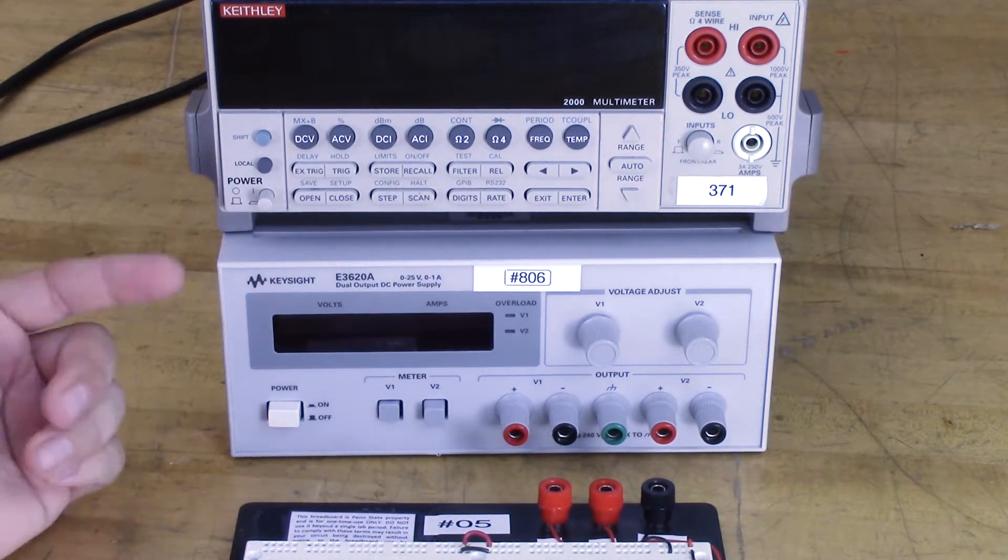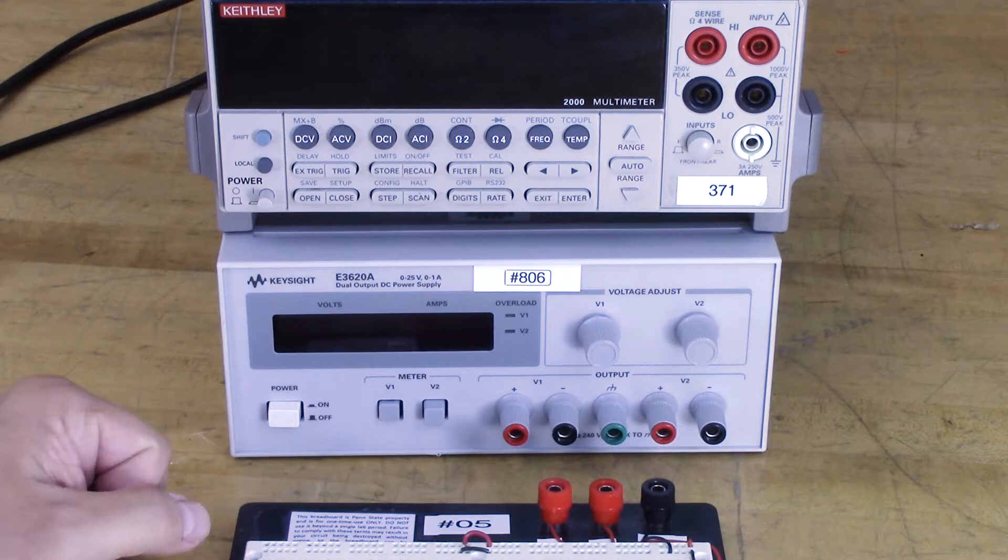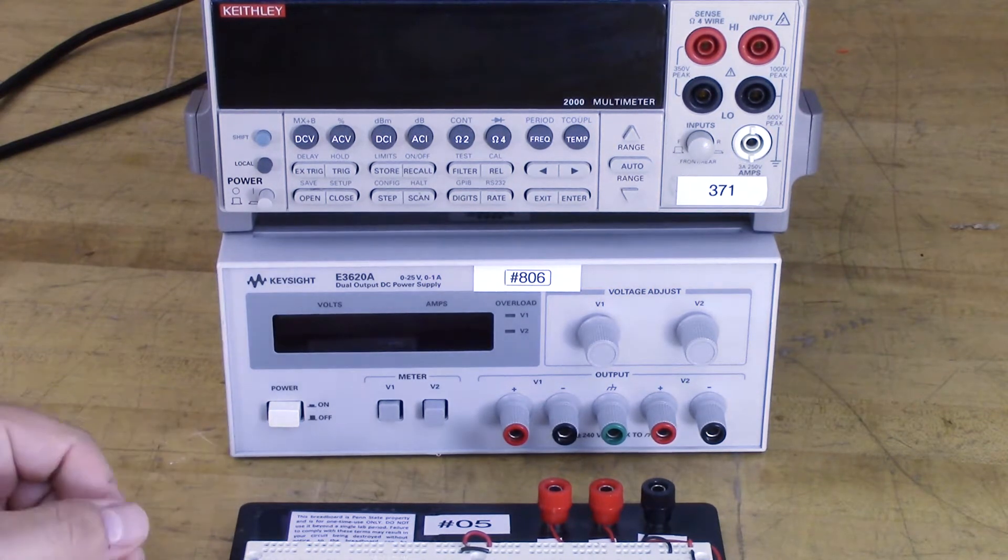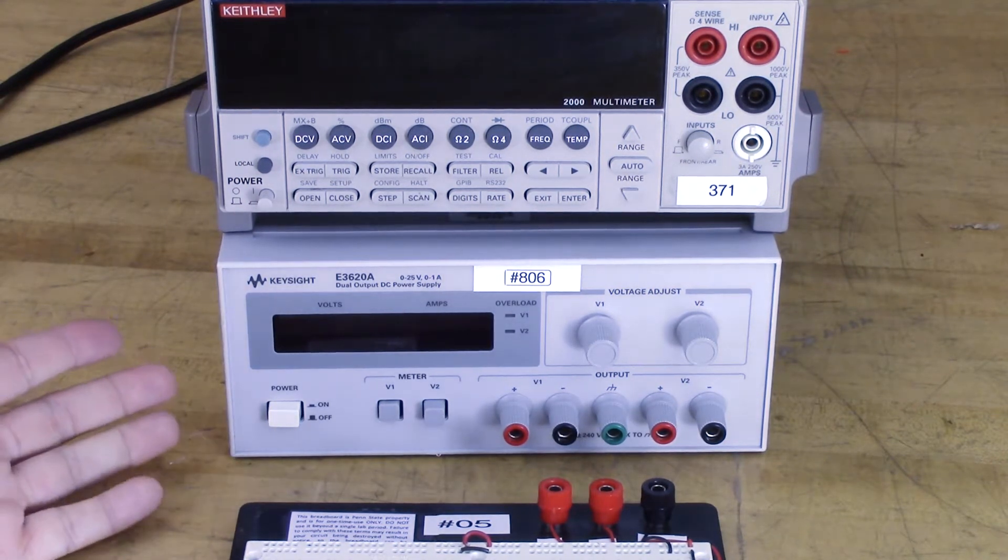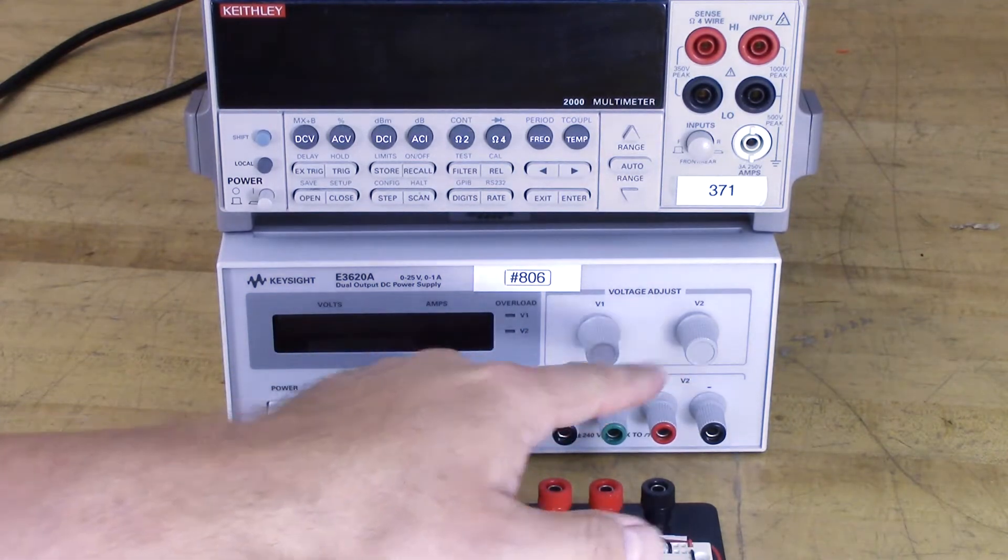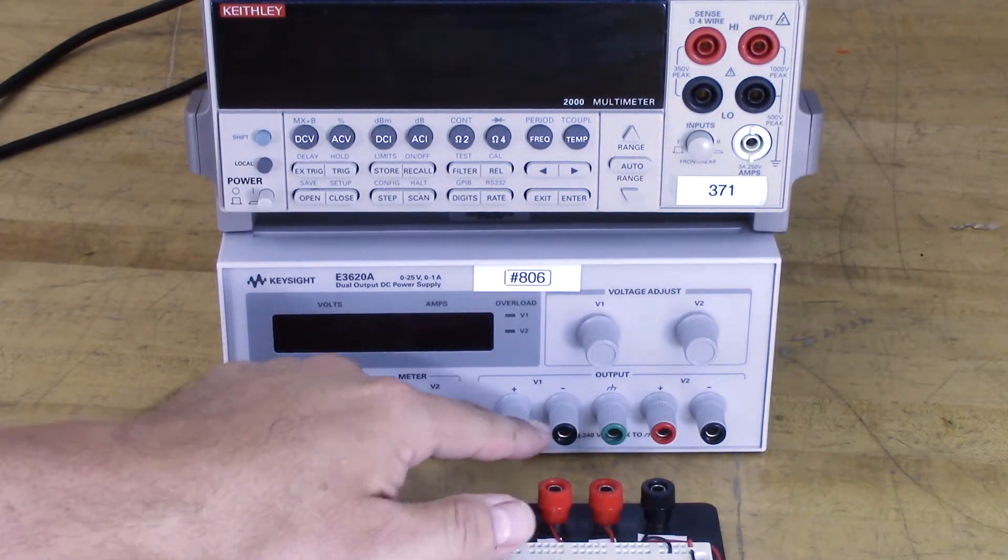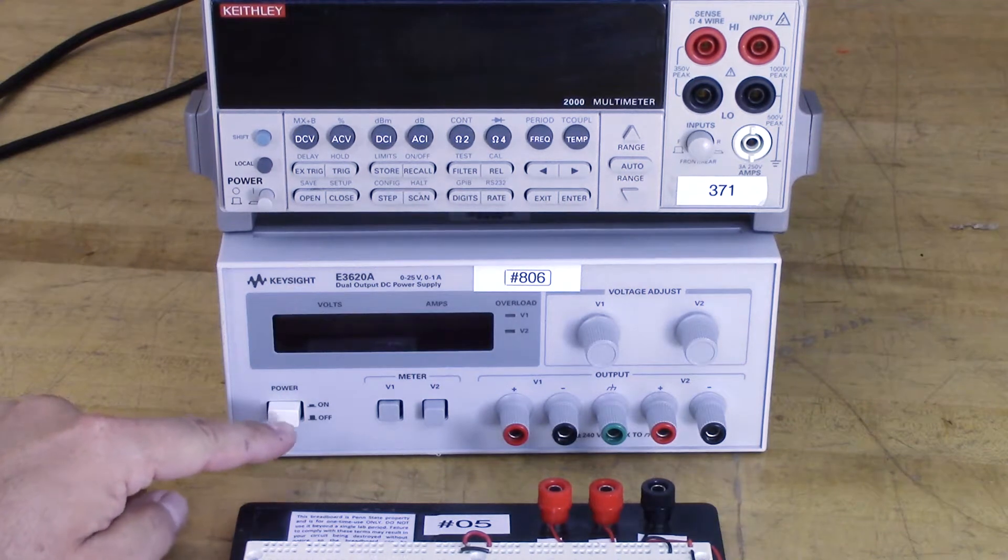We're going to use the Keithley just to show the voltage differences. This is a very basic power supply. It has basic constant voltage. All you do is select the different voltages you want at each output. You can see there's a big on and off button.